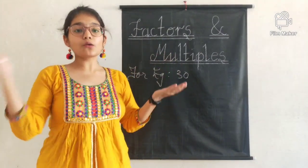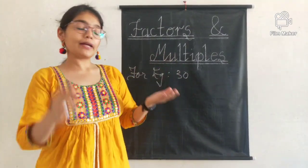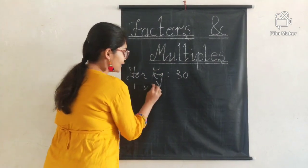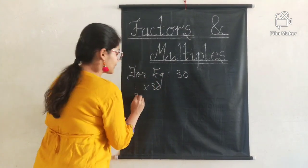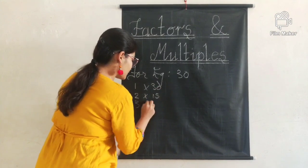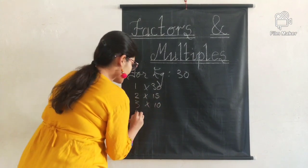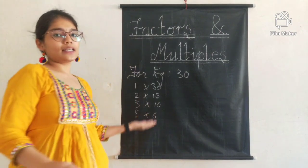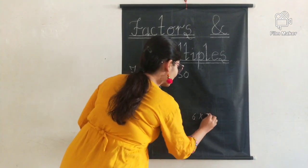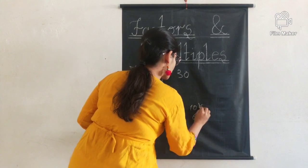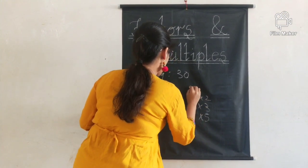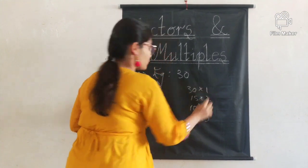Let us try to understand it with an example. How many pairs of numbers can we multiply to get 30? First, we have 1 into 30. The other can be 2 into 15. The other can be 3 into 10. Then we can have 5 into 6.